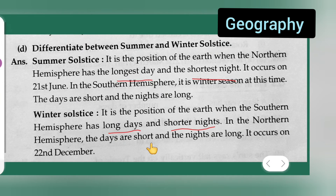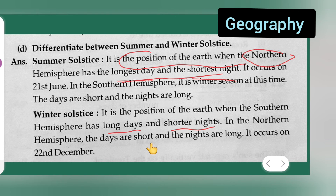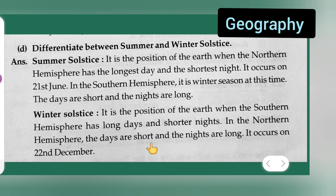So, to summarize: during summer solstice, the northern hemisphere has the longest day and the shortest night, while the southern hemisphere has long days and short nights during winter solstice. This is the difference between summer solstice and winter solstice. I hope you all have understood the answer to today's question. You can take it down — thanks for watching.